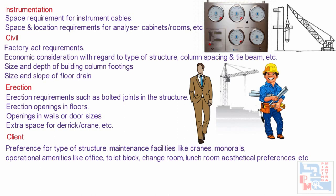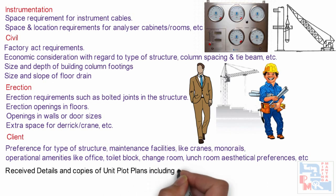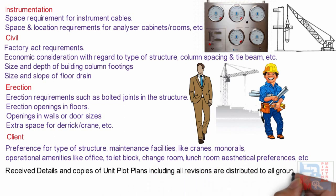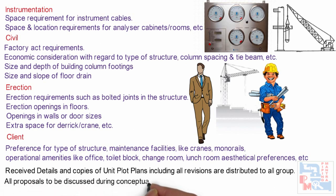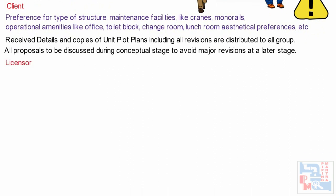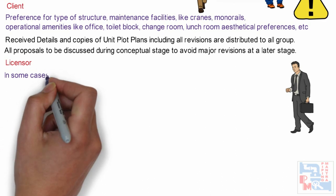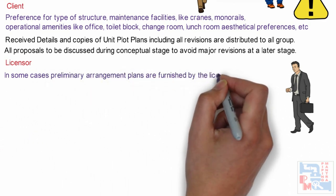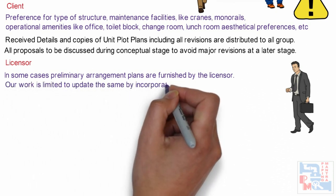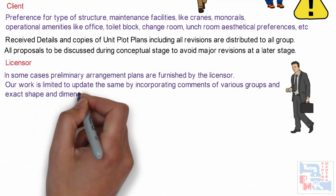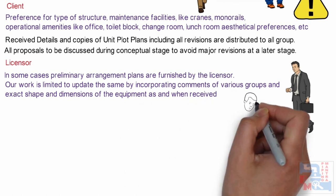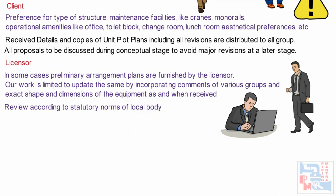Operational amenities like office, toilet, change room, and lunch room, as well as aesthetical preferences like Vastu, etc. Details are received from all these groups and the client, and after that updated preliminary equipment layout copies of unit plot plans including all revisions are distributed to all of them. It is advisable that all proposals be discussed during the conceptual stage itself with all the groups so as to avoid major revisions at the later stage. In some projects, we have process licensors — the entity that owns all or part of the process within the plant. In such cases, preliminary arrangement plans are furnished by licensors, usually on 1:200 scale, and our work is limited to updating the same incorporating comments of various groups, updating exact dimensions from the vendor, and reviewing according to statutory norms of local bodies, which may differ from country to country.